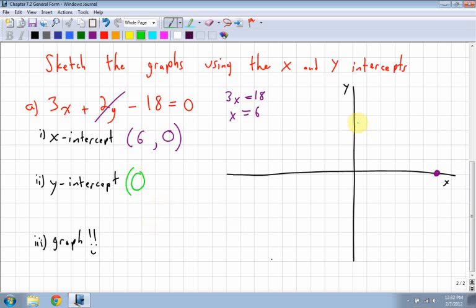So at this time, my x value is 0 because I'm not going anywhere left or right. This time, I go back up to my equation and I plug a 0 into x, which is going to get rid of my x-term. I'm left with 2y minus 18 equals 0.